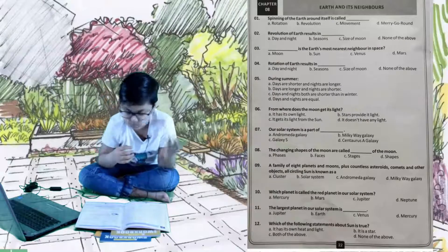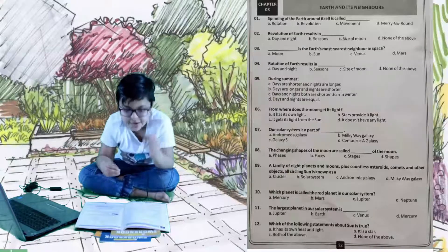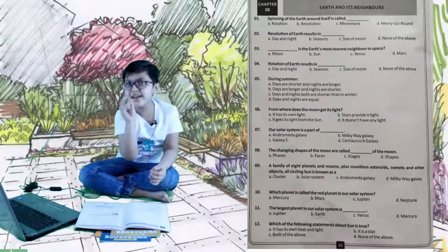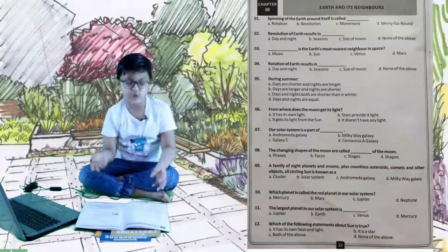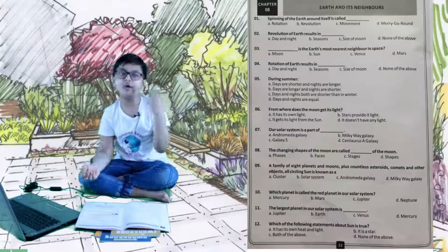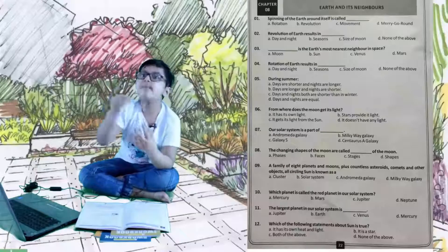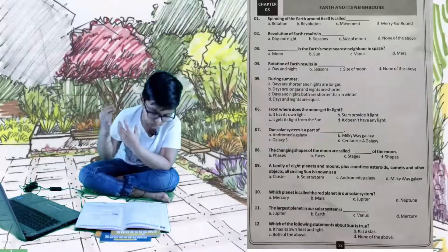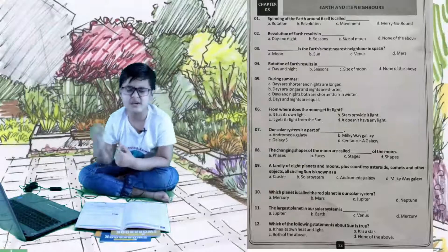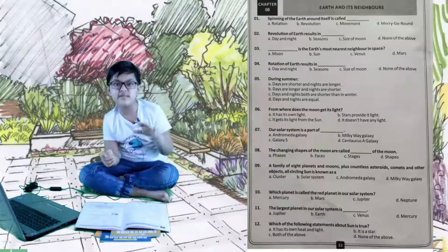Rotation means rotating itself in its axis, and revolution means to revolve around its own star. I'm saying star because other planets also do revolution. C is movement, this is a very bad word because movement means to go anywhere, here or there. The right answer is A, rotation.